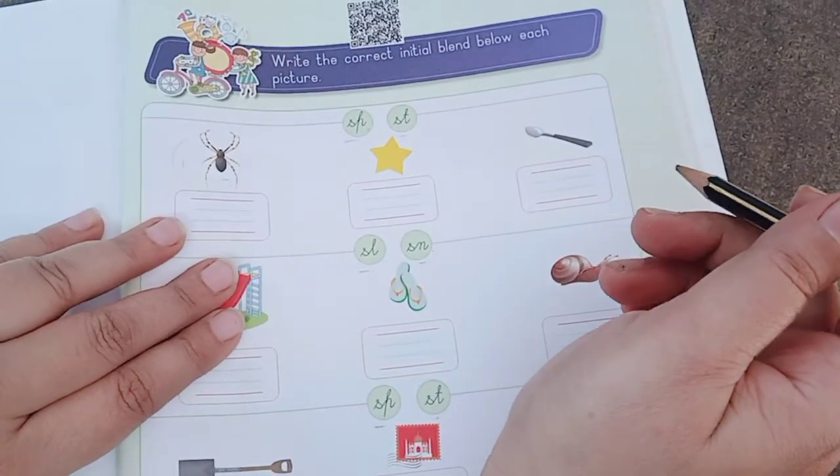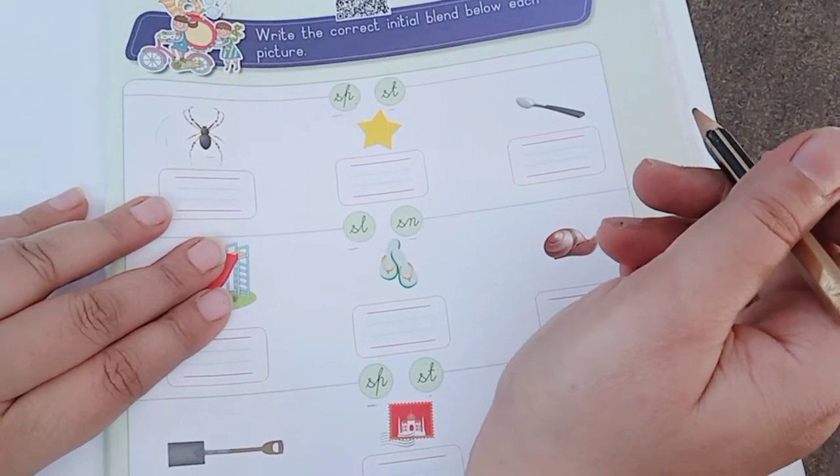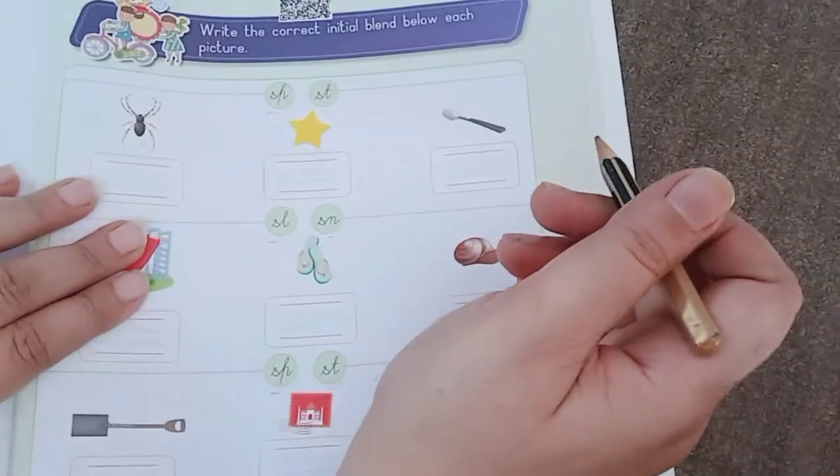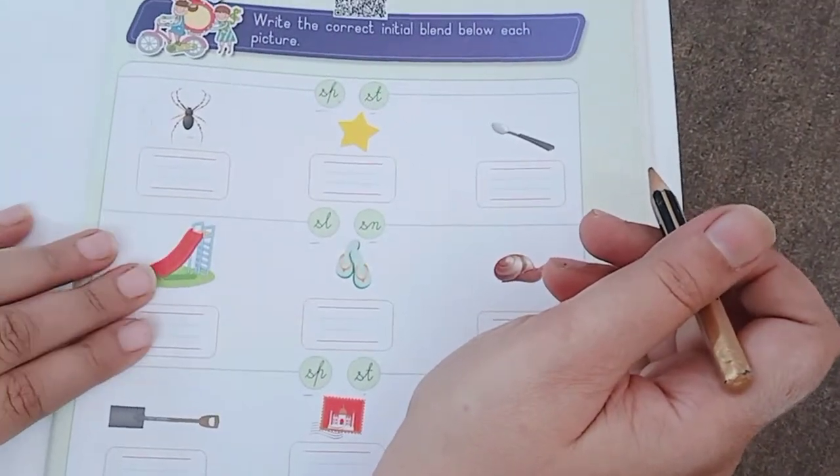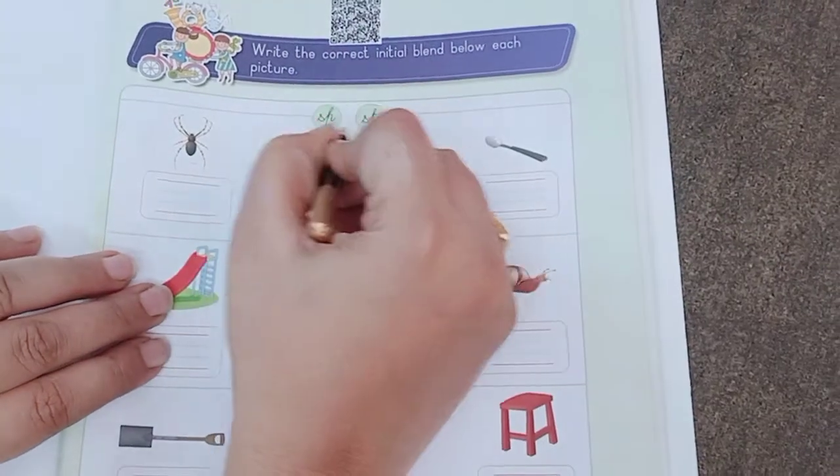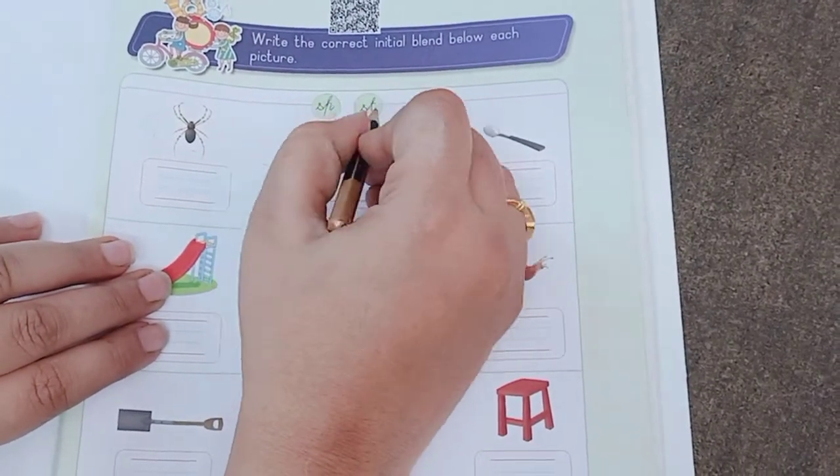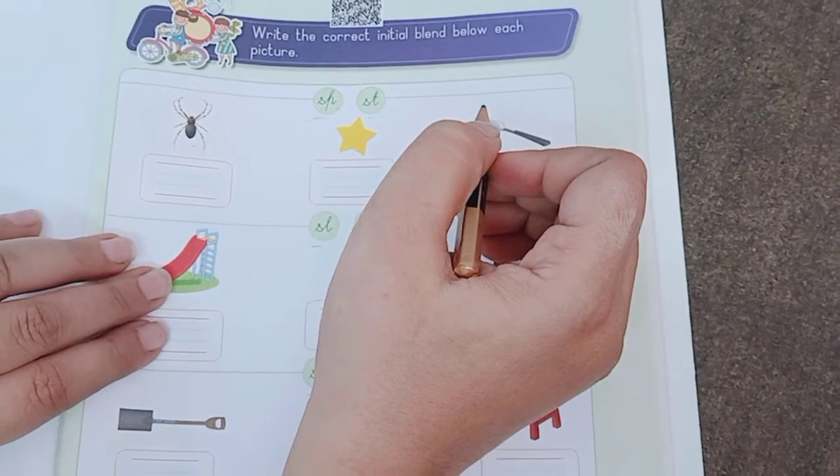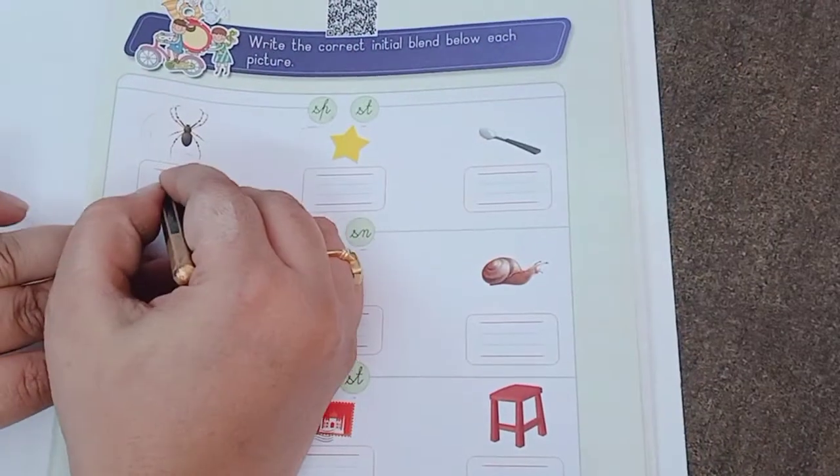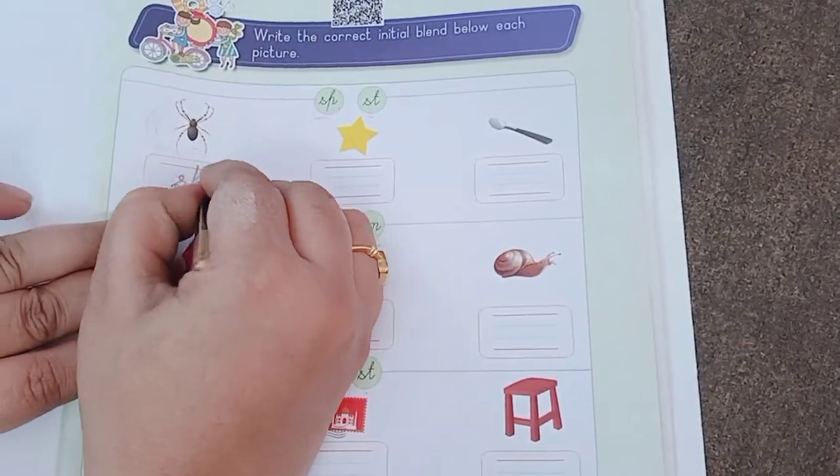So what picture is this? It is a spider. Spider, SP, first sound is SP. SP ke liyeh, which blend will we use? SP or ST? SP, S and P. Yes, you are correct. So we will write SP.